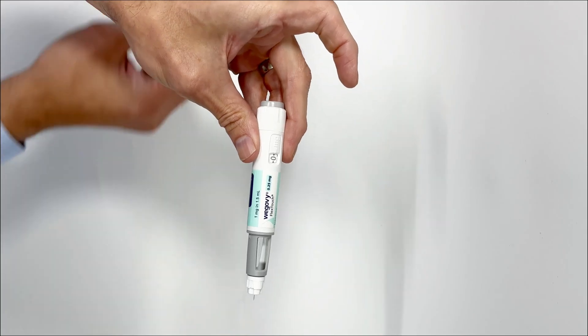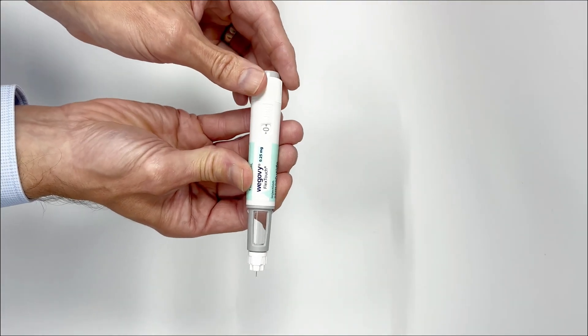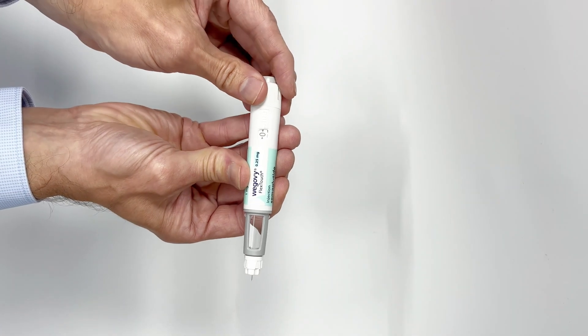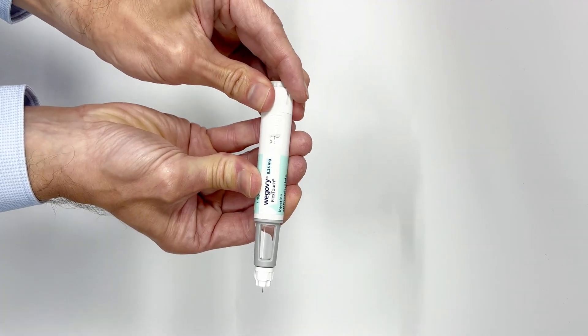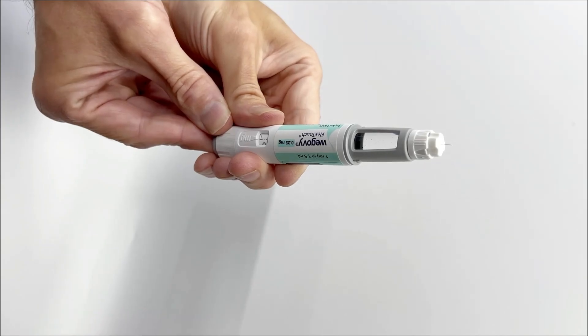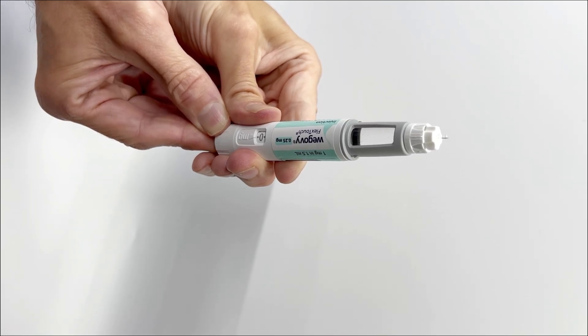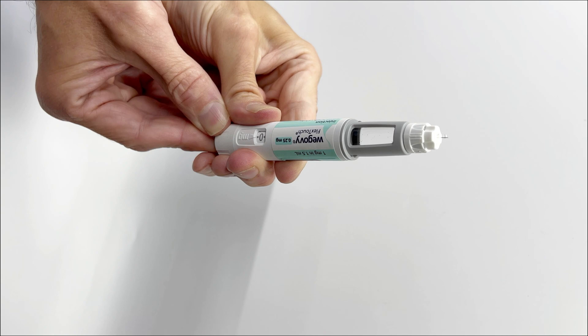Before your first injection with a new pen, we need to check that the treatment flows. You can do this by turning the flow selector until you see the flow check symbol. Now hold the pen with the needle pointing up. Press and hold the dose button until the dose counter returns to zero. A drop should appear on the tip of the needle. The drop indicates that the pen is ready to use.